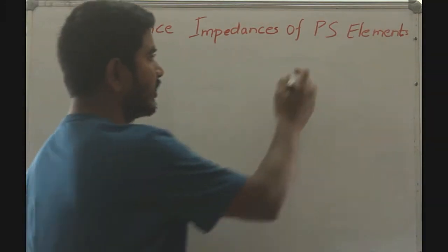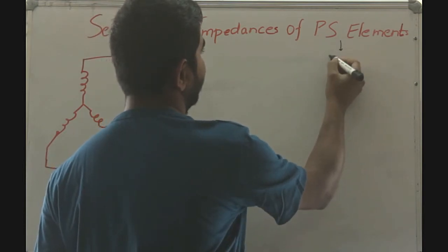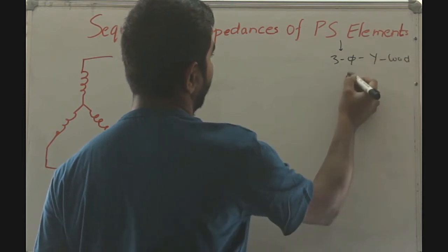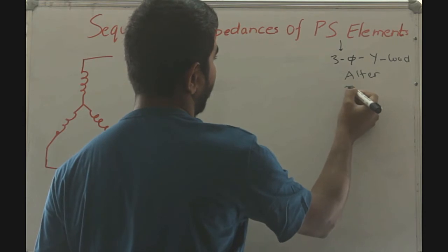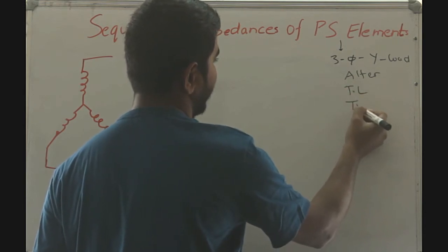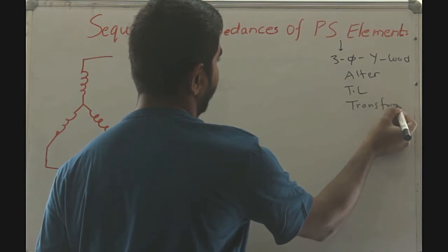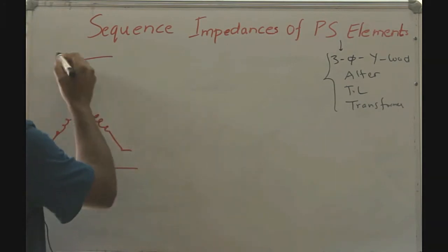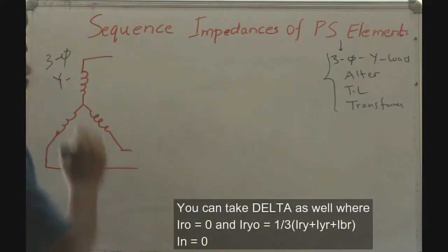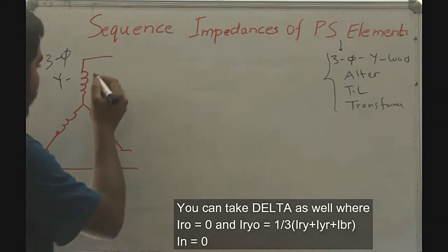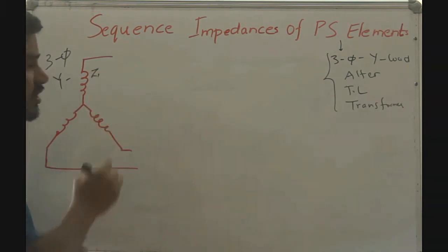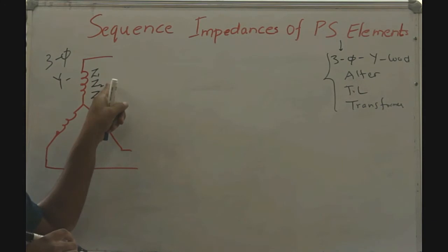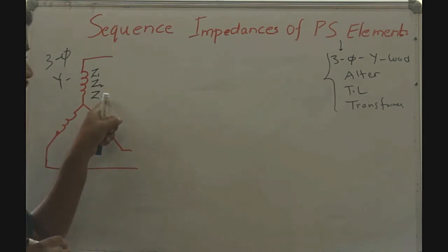In this video, we shall discuss the sequence impedance of power system elements: a three-phase star connected load, the alternator, the transmission line, and the transformer. For the three-phase star connected load, the load will have a positive sequence impedance Z₁, a negative sequence impedance Z₂, and a zero sequence impedance Z₀.